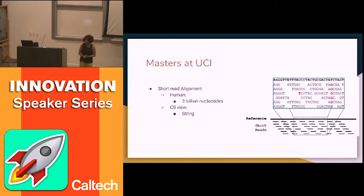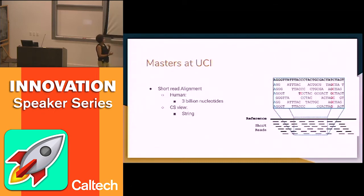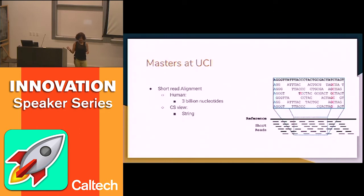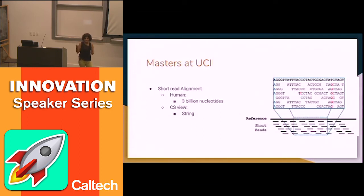Instruments give you very short substrings — smaller parts of the big reference — and one of the hot problems is trying to put those strings back into the reference to find where they are. The reads are on the order of 100 characters, but compared to the 3 billion character reference genome, they're very small. You get all these short reads and you want to map them back to the string fast. It's a lot of data — you want to be fast but also process all of it.